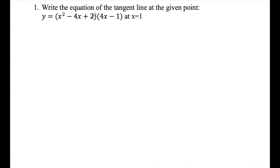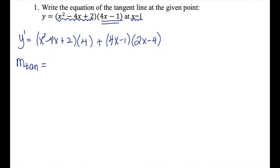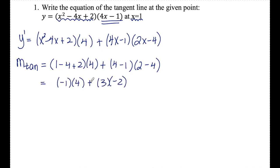Number one: write the equation of the tangent line at the given point. Here's my curve y, and I'm looking to write the tangent line at x equals 1. The first thing I want to do is find y prime. I see I'm multiplying a trinomial and a binomial, so to find y prime I'm going to use the product rule, where this is my first and this is my second. So I'm going to have x squared minus 4x plus 2 — that's the first — times the derivative of the second, which is 4, plus the second, 4x minus 1, times the derivative of the first, which is 2x minus 4. The slope of the tangent line comes from the derivative, so m tan — plugging x equals 1 into the derivative — I end up with negative 1 times 4 plus 3 times negative 2, which is negative 4 minus 6, giving me negative 10. So m tan equals negative 10.